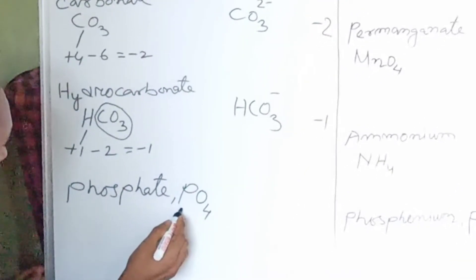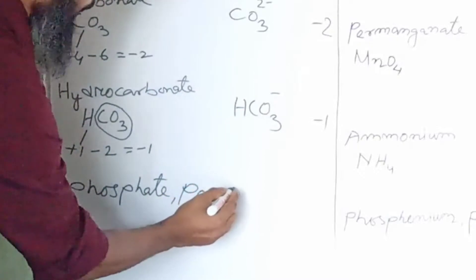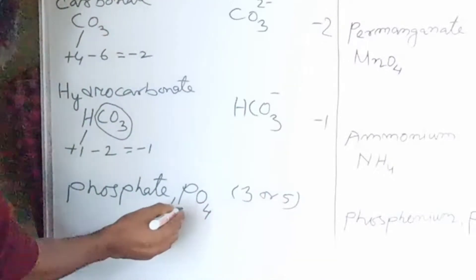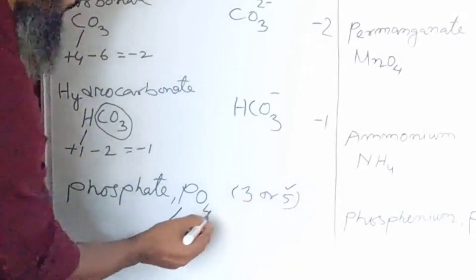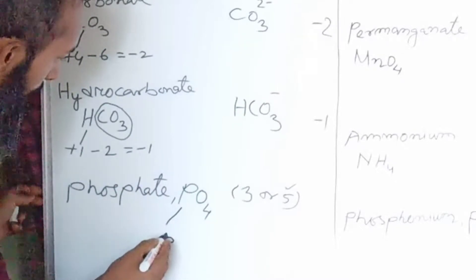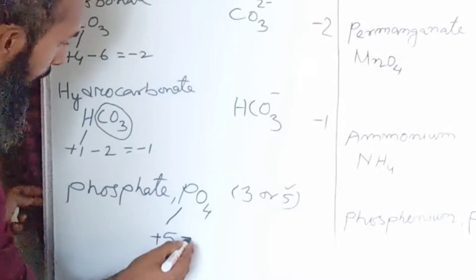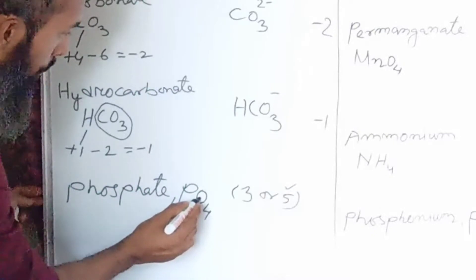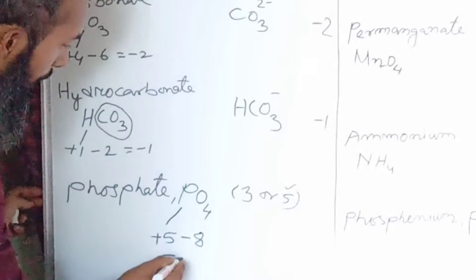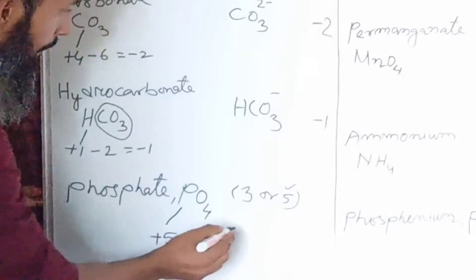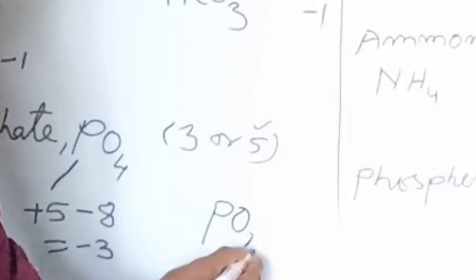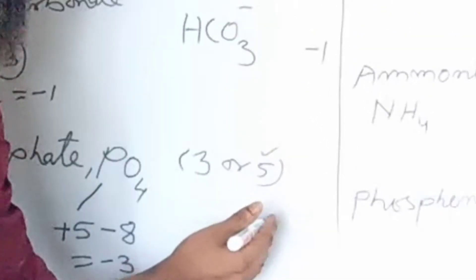Now let's see phosphate. Phosphorus valency can be either 3 or 5. Here we are going to select 5 because the number of oxygen atoms is more. Phosphorus is electropositive, oxygen is electronegative with valency 2. Four atoms of oxygen give 2 times 4 equals 8. So plus 5 minus 8 gives valency minus 3. Its symbol is PO4 3-minus.